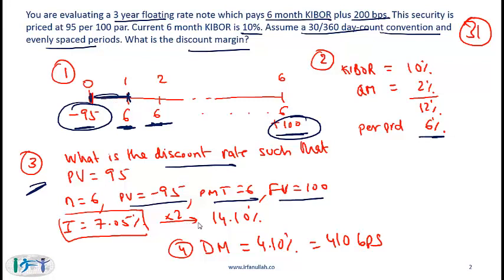Double that to get the annual number and you will get 14.10%. Step four then is to come up with the discount margin. The discount margin is simply the difference between this rate 14.10 and Kybor. So the discount margin is 4.1% in basis points, that is 410 basis points.